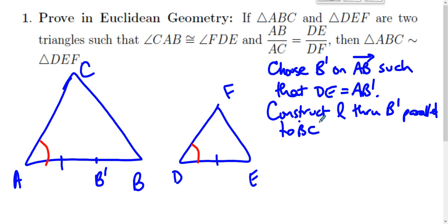Parallel lines cut by transversals: these are congruent, these are congruent. Right?